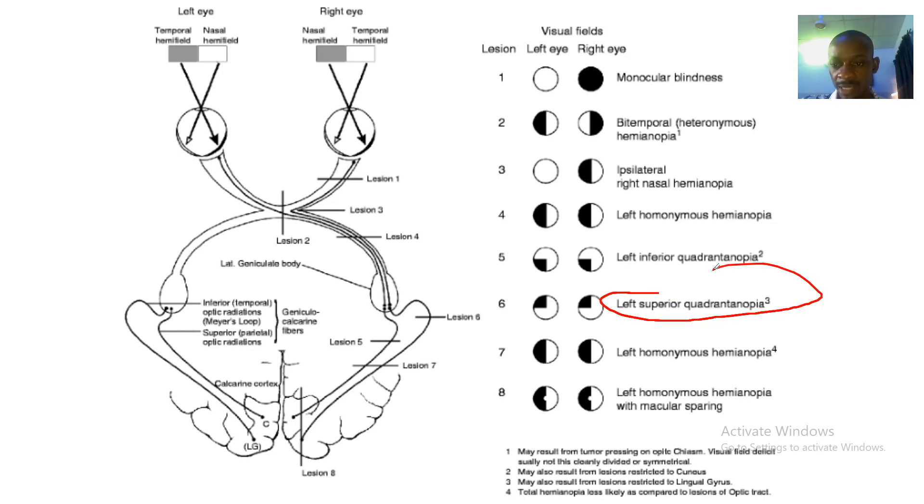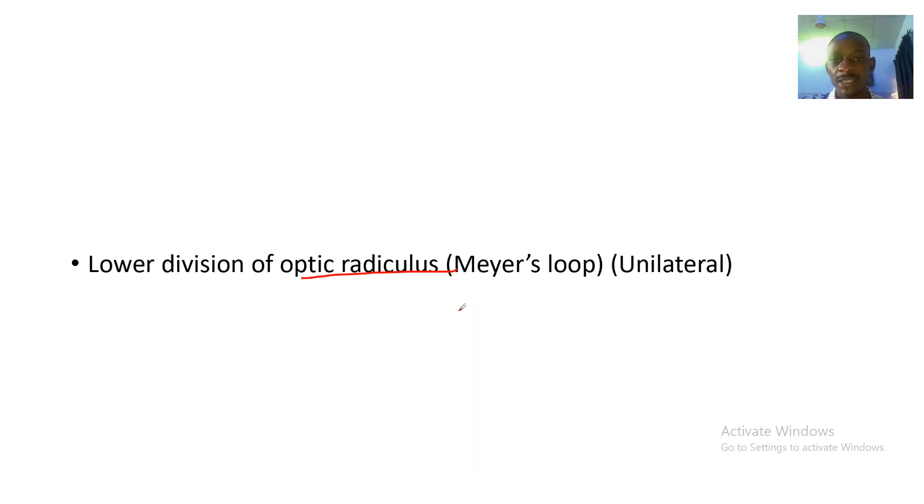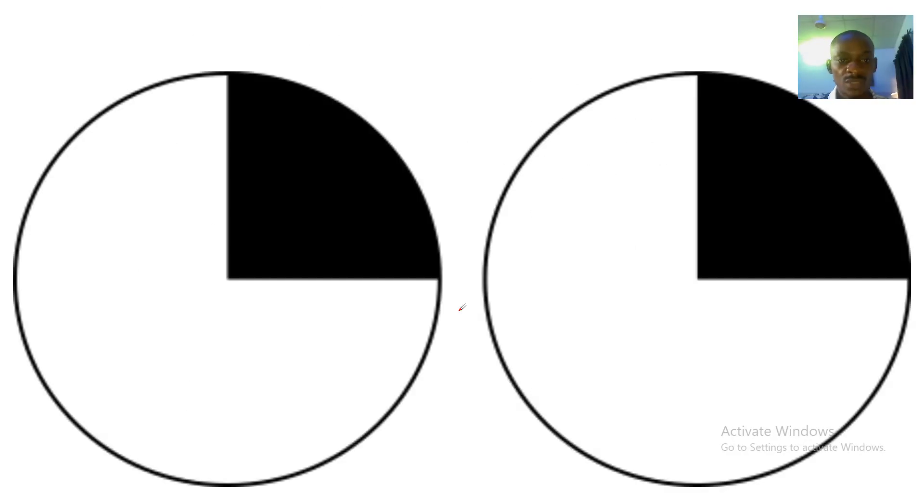And you could see lesion 6, that's lesions in the lower optic radiations. So lesions in the lower optic radiations will cause superior quadrantanopia. All right.